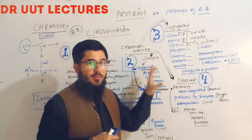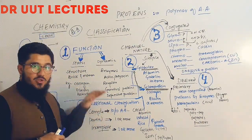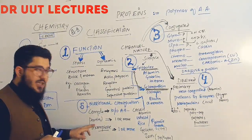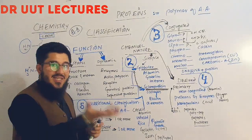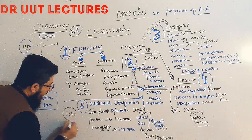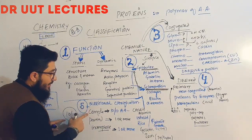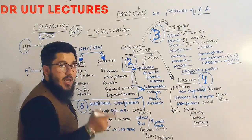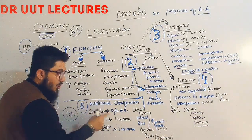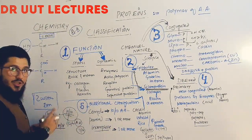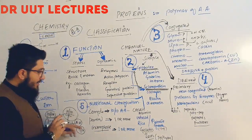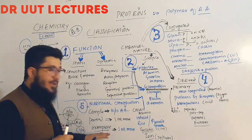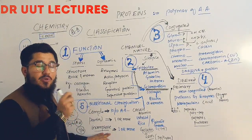Now let's move to the nutritional classification. On the basis of nutrition, proteins are classified into three major types: complete, partially complete, and incomplete. Complete proteins contain all 10 essential amino acids — examples are casein and albumin. Partially complete proteins also contain all 10 essential amino acids, but one or more of them are present in insufficient concentration. Incomplete proteins are missing one or more amino acids entirely, so they provide only 7, 8, or 9 out of 10 essential amino acids.